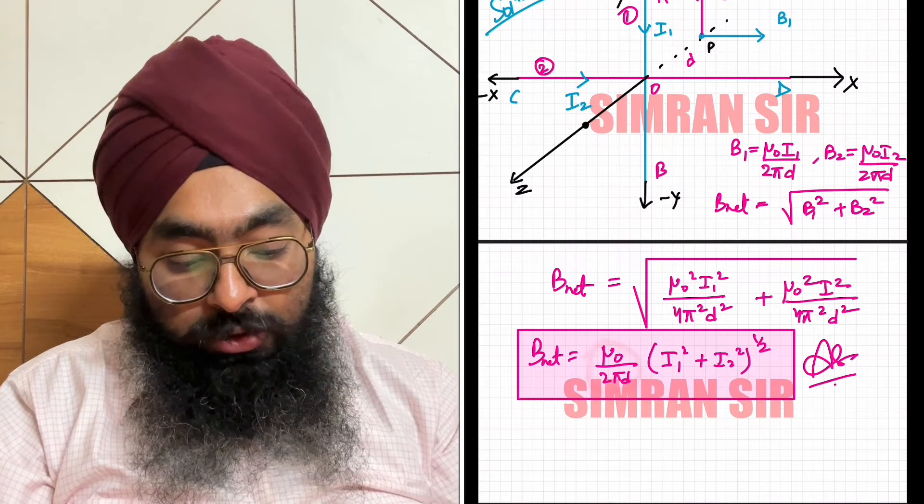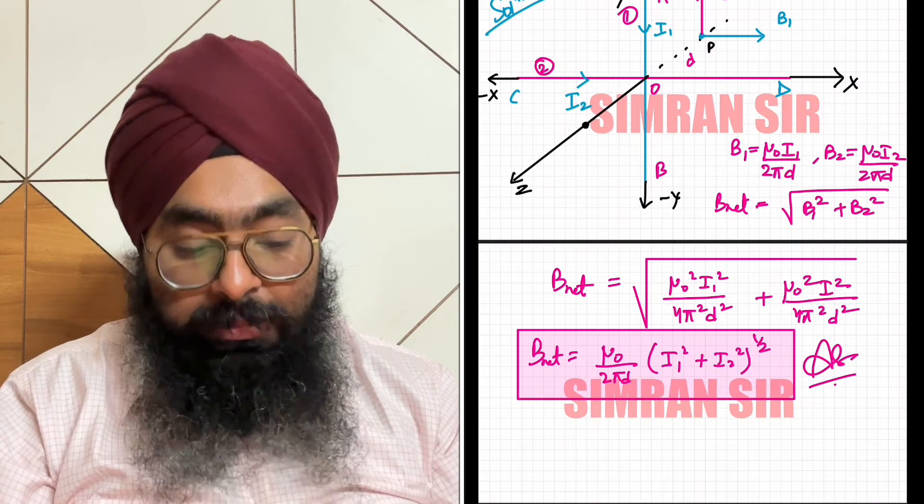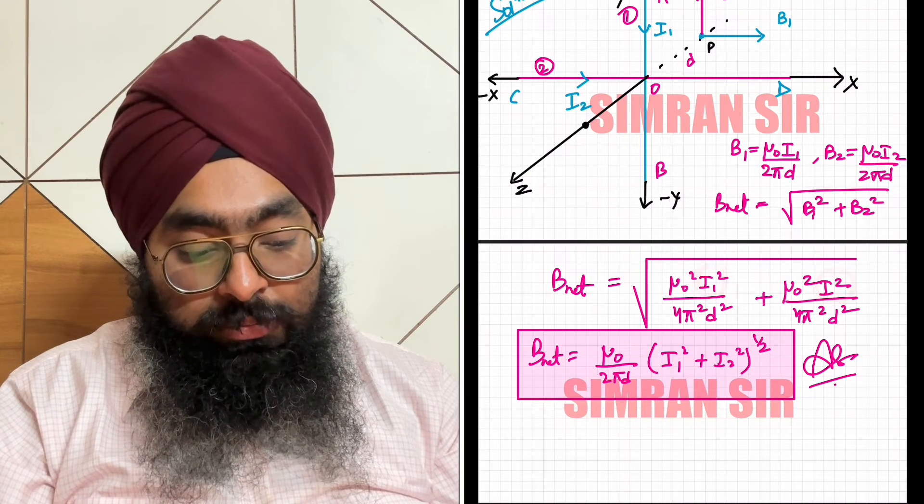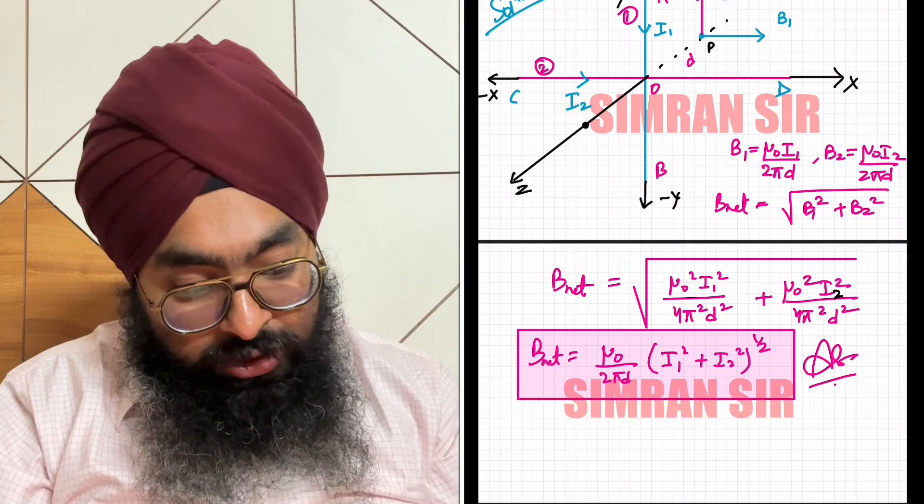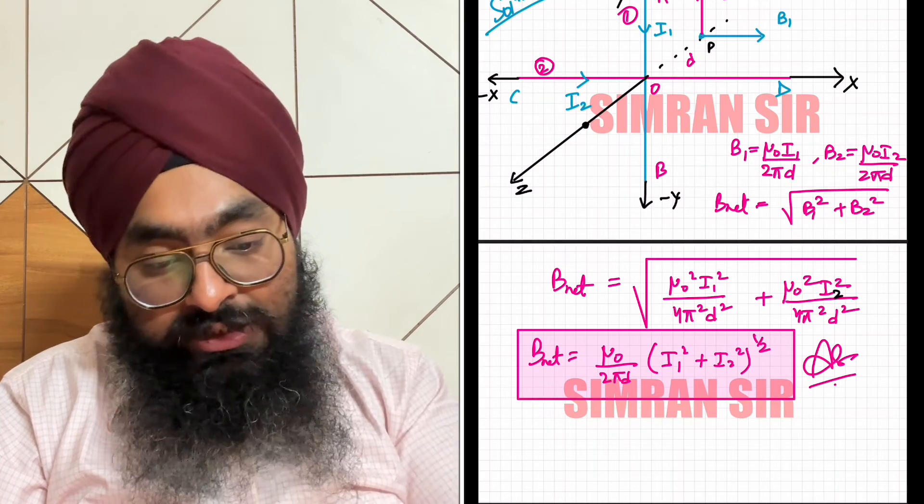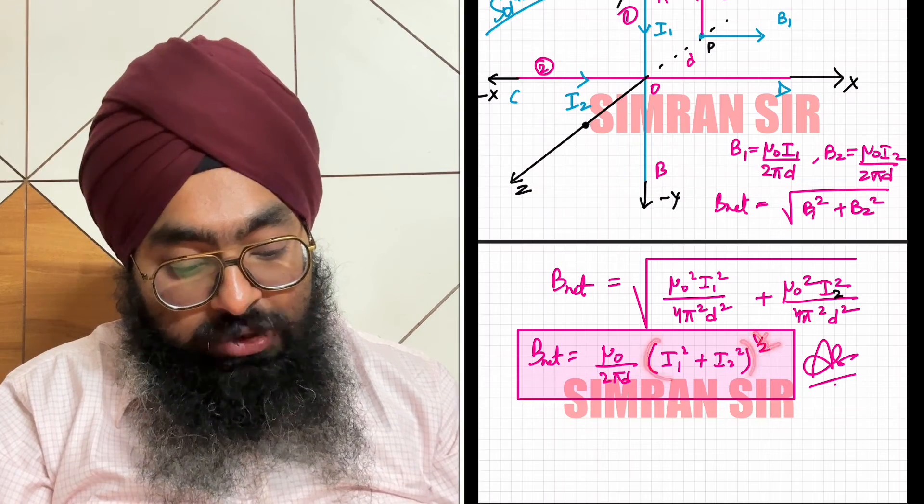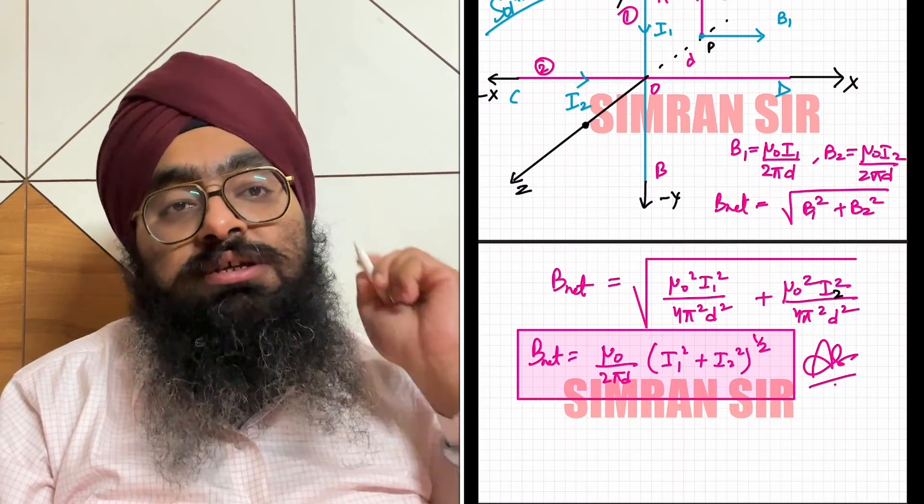Taking the square root, we get B_net = (mu_0)/(2*pi*d) times sqrt(i1^2 + i2^2). This is our final answer.